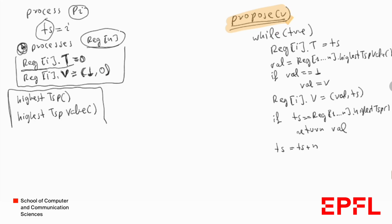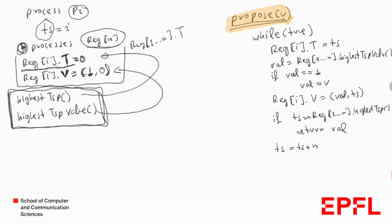For simplicity we assume two helper functions: highest_timestamp and highest_timestamp_value. The function highest_timestamp returns the highest timestamp across all timestamps stored in reg from 1 to n. The function highest_timestamp_value returns the value with the highest timestamp among all elements in this array.